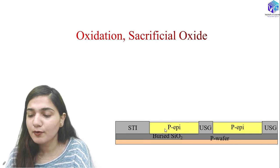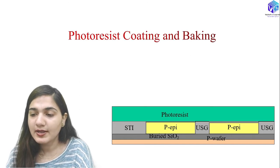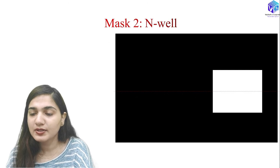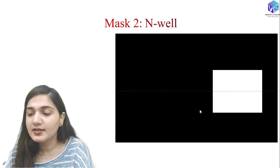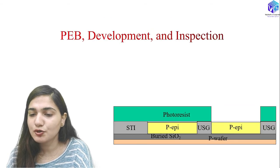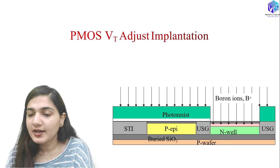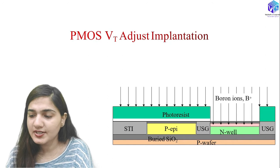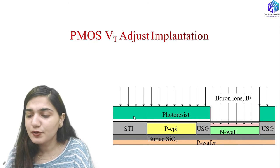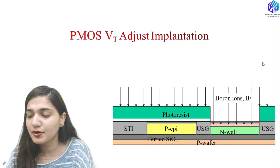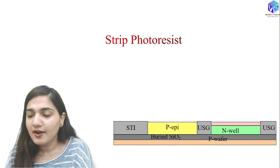After photoresist coating and baking, mask two — the N-well mask — is used for N-well formation. After alignment, exposure, development, and inspection, the N-well implantation is performed. Then PMOS VT adjustment implantation is done with boron ions. The photoresist blocks the boron ions from the P-type epitaxial region, while in the N-well the boron ions are implanted.